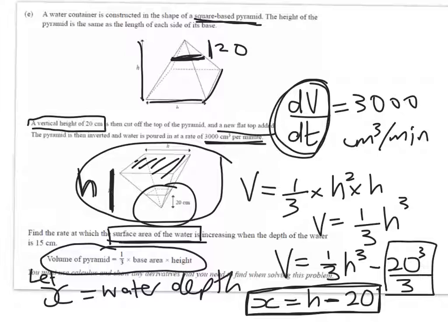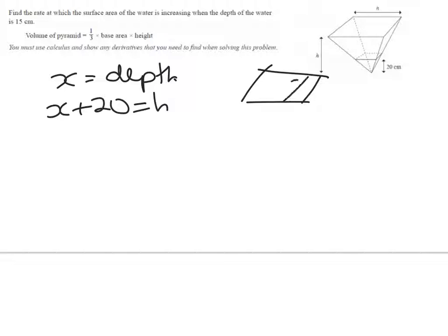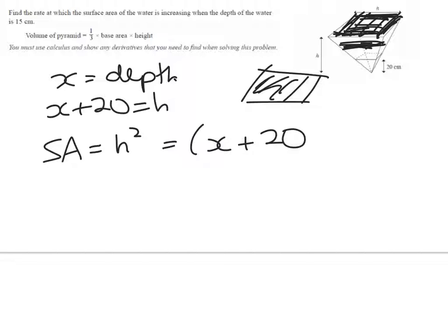So x is equal to the depth. And we know that x plus 20 is equal to h. We're looking for the surface area, which is going to be the flat square bit. Here's my surface area here. That's shown if the water trough is full up, but I can imagine parallel planes like that the whole way down. So the surface area is just going to be equal to h squared, which is equal to x plus 20 squared.